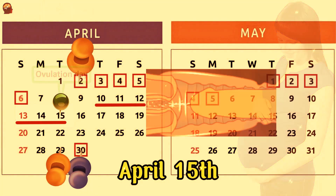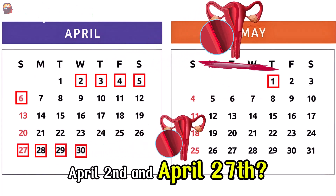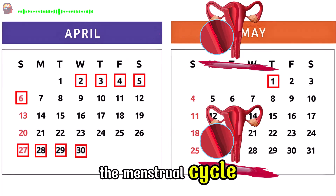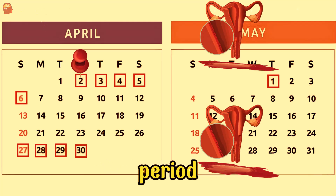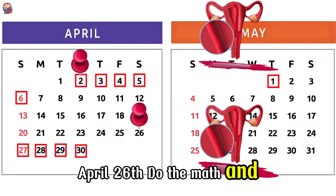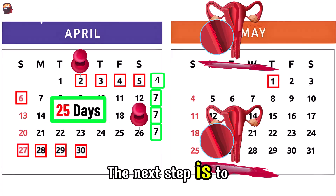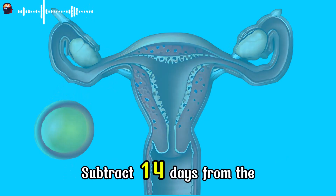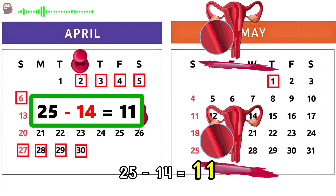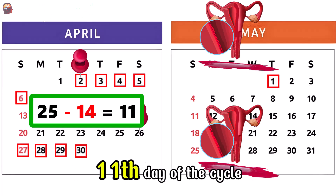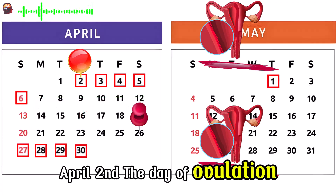In this example, the 3 days of maximum fertility are April 13th, 14th, and the day of ovulation, April 15th. Now, what are the days of maximum fertility if the period occurred on April 2nd and April 27th? First, calculate the length of the menstrual cycle. Count from the first day of the period, April 2nd, to the day before the first day of the next period, April 26th. Do the math and you get 25 days: 4 plus 7 plus 7 plus 7 equals 25. The next step is to calculate the day of ovulation: subtract 14 days from the cycle length. 25 minus 14 equals 11, so ovulation occurs on the 11th day of the cycle. Count 11 days from April 2nd — the day of ovulation is April 12th.